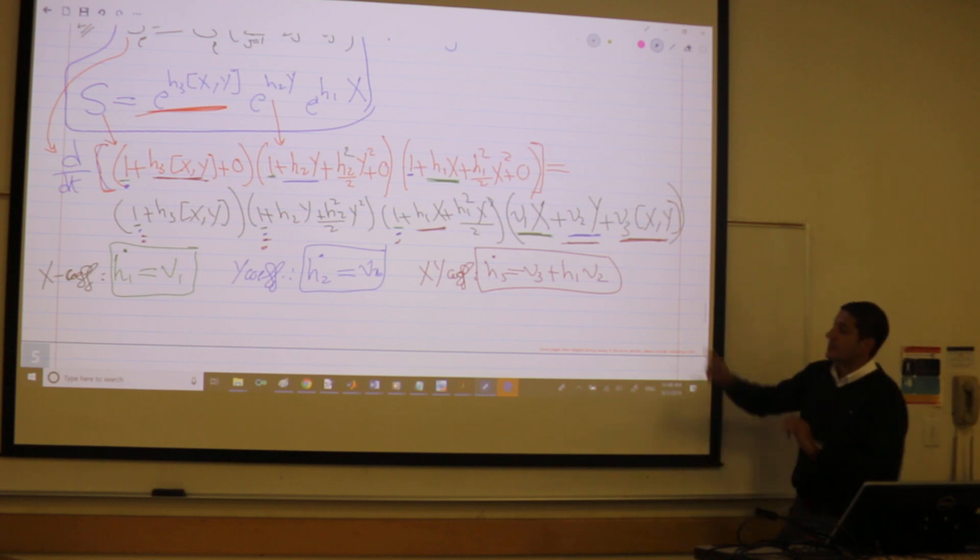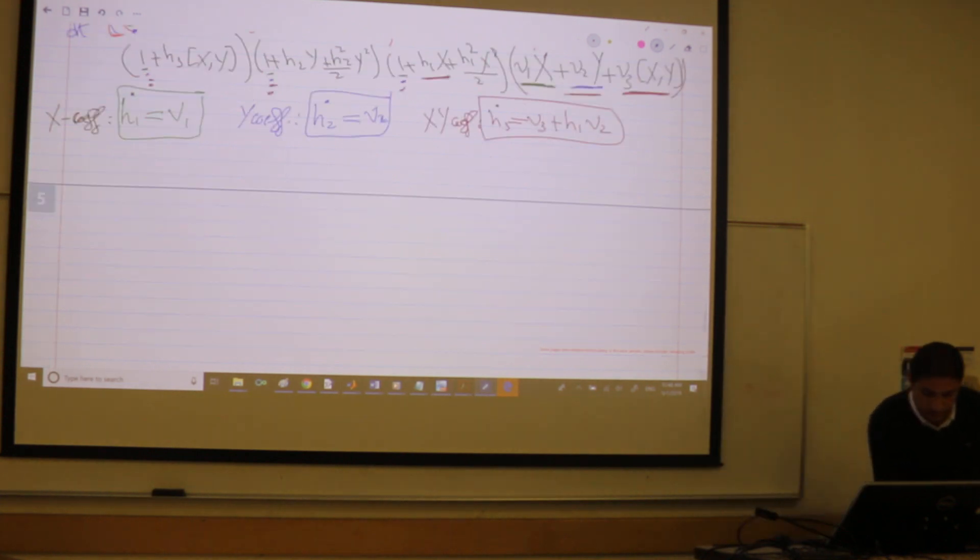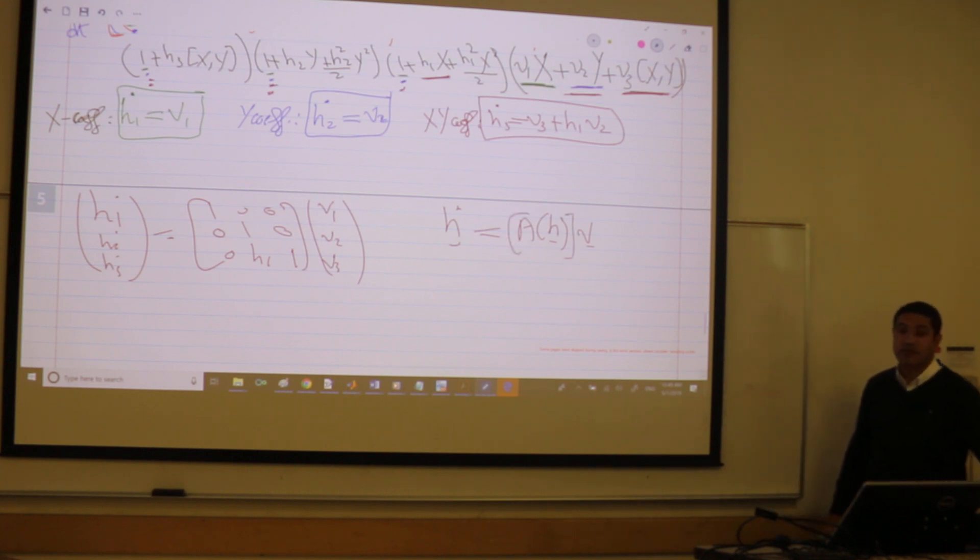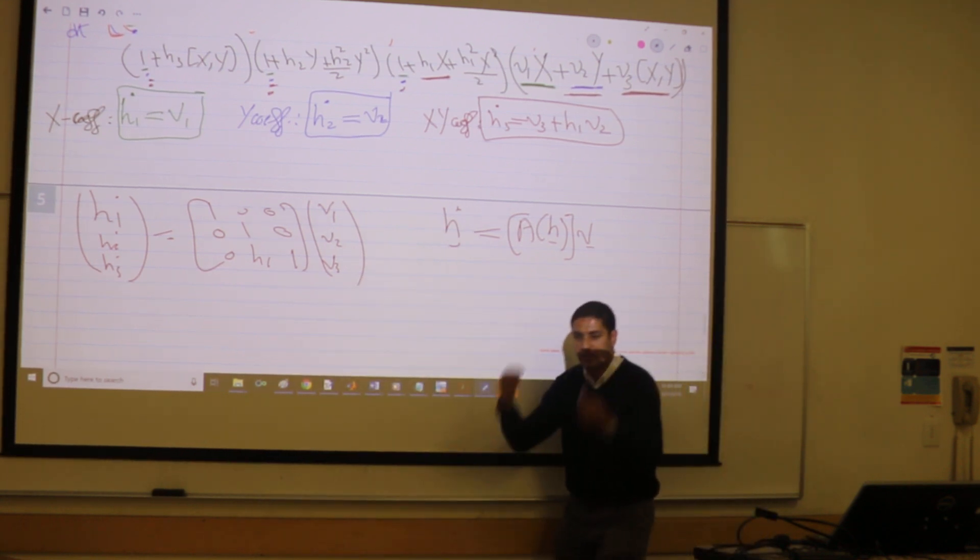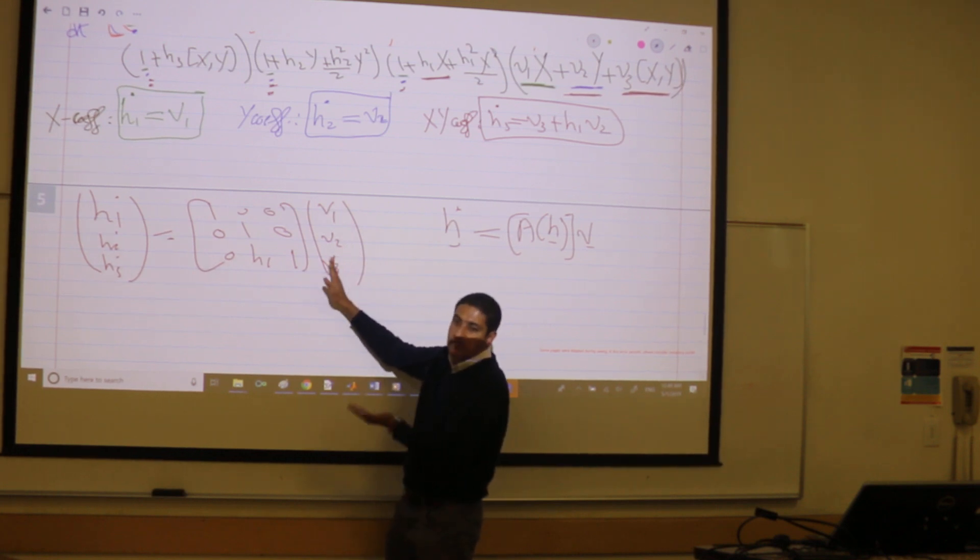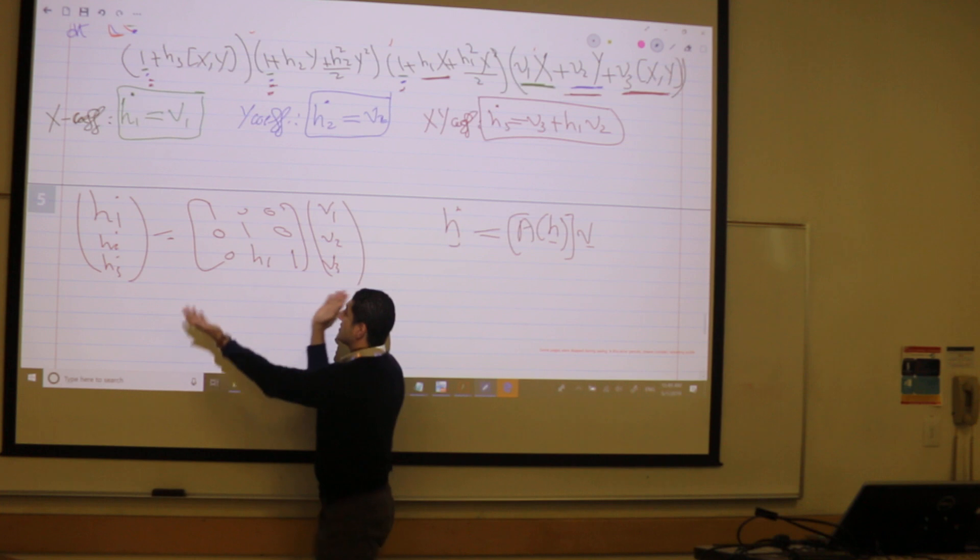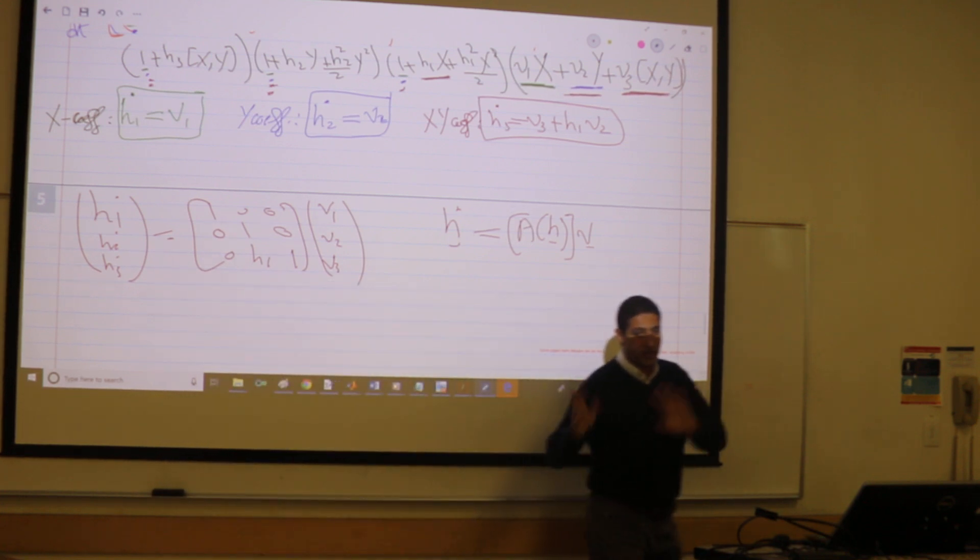The interesting thing is that this structure is always like this. It's always like... So this is H1 dot, H2 dot, H3 dot, right? Is some linear in the V1, V2, V3. So this is (1, 0, 0), (0, 1, 0), (0, H1, 1). So it's always like H dot equals A of H times V. And it's independent of the problem. It's very interesting. So whenever you have a structure like M is 2 and K is 2, don't do it again, please. It's always like this. It's independent of the problem. The thing that is dependent on the problem is V's. V is function of time, depending on the curve that you constructed. And the solution will depend on the V's. But this structure, you construct it for every combination of M and K. It's fixed. So that is a very cool property.